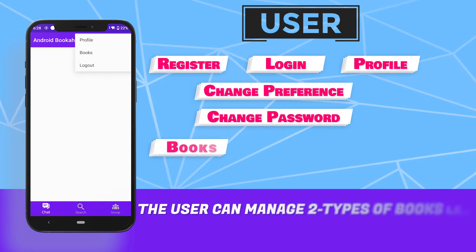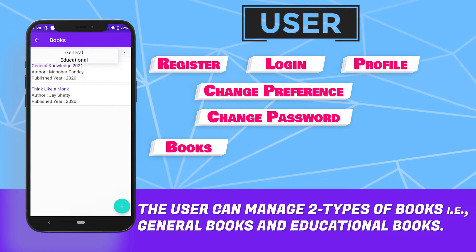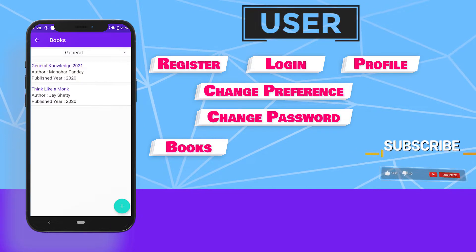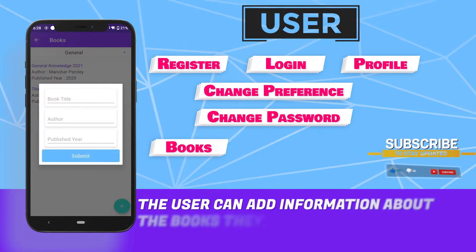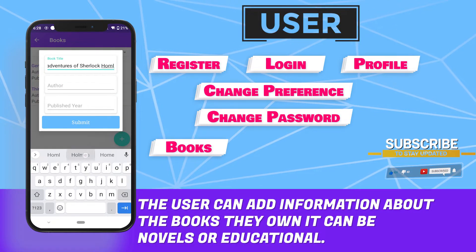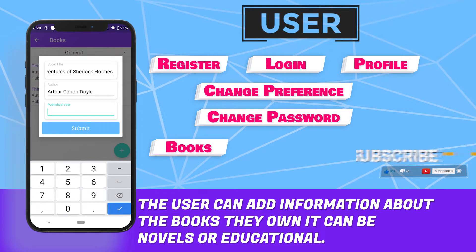The user can manage two types of books — general books and educational books. The user can add information about the books they own. It can be novels or educational.